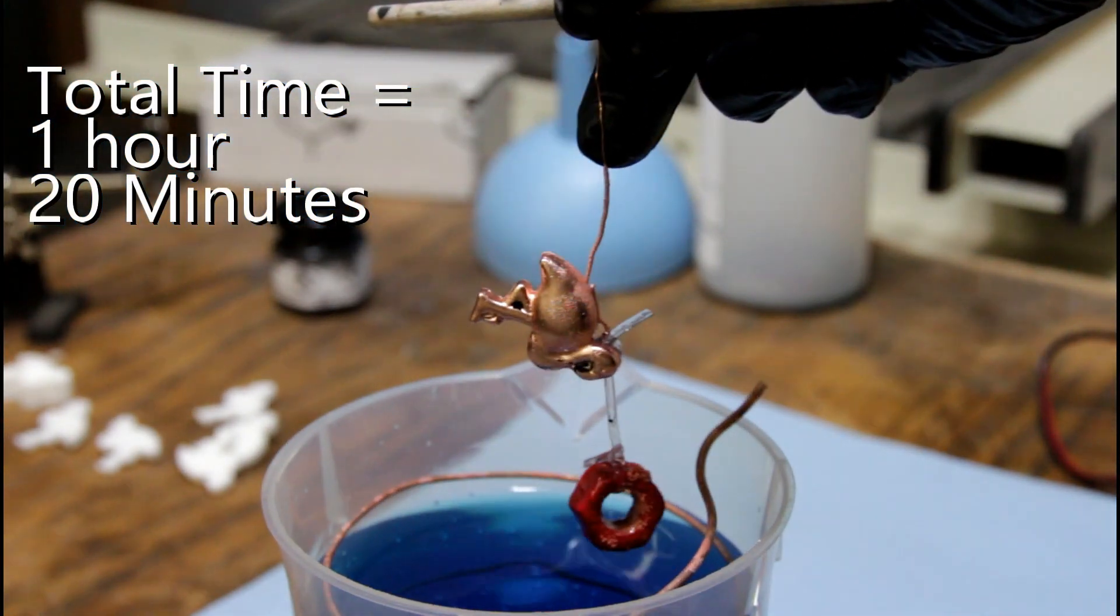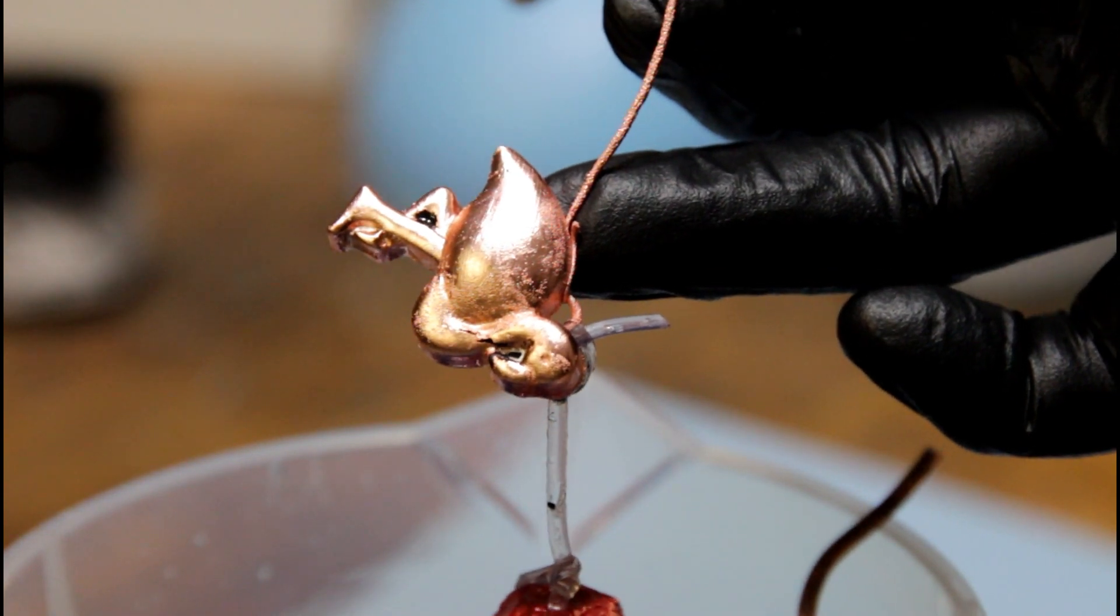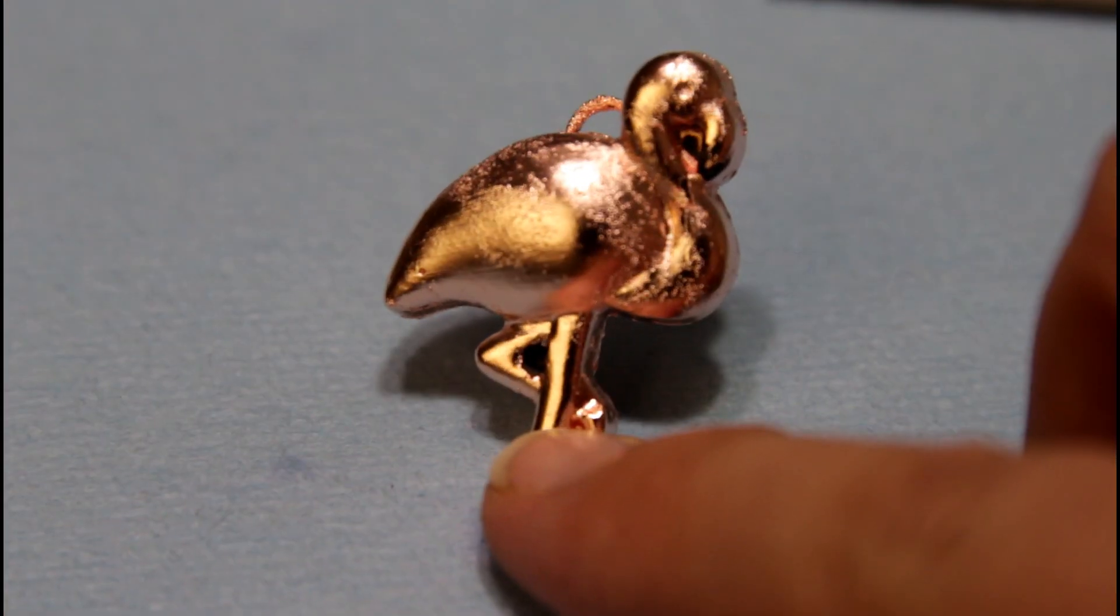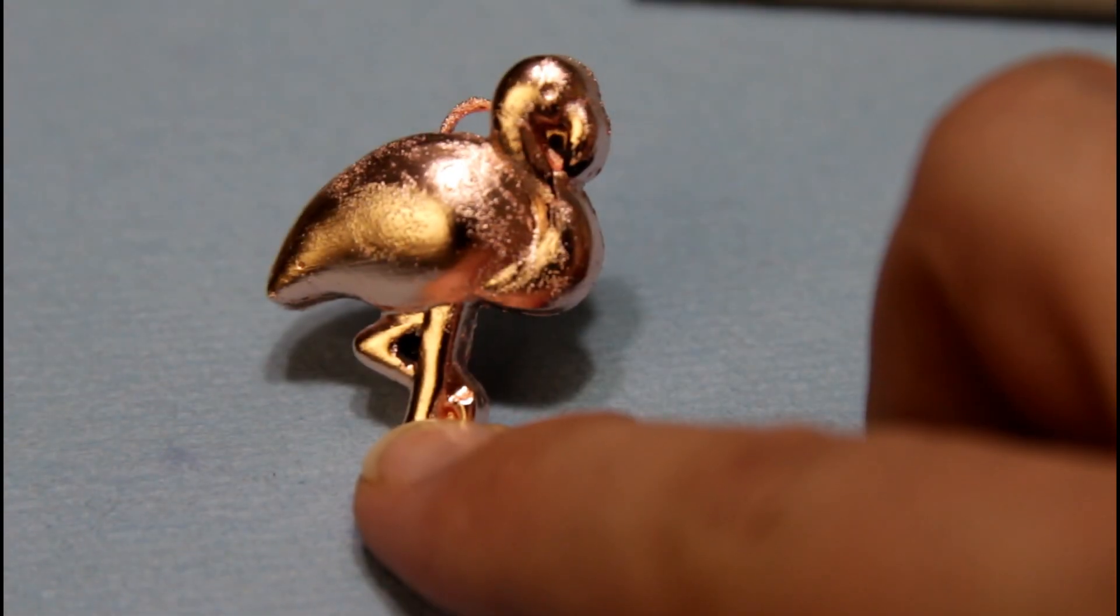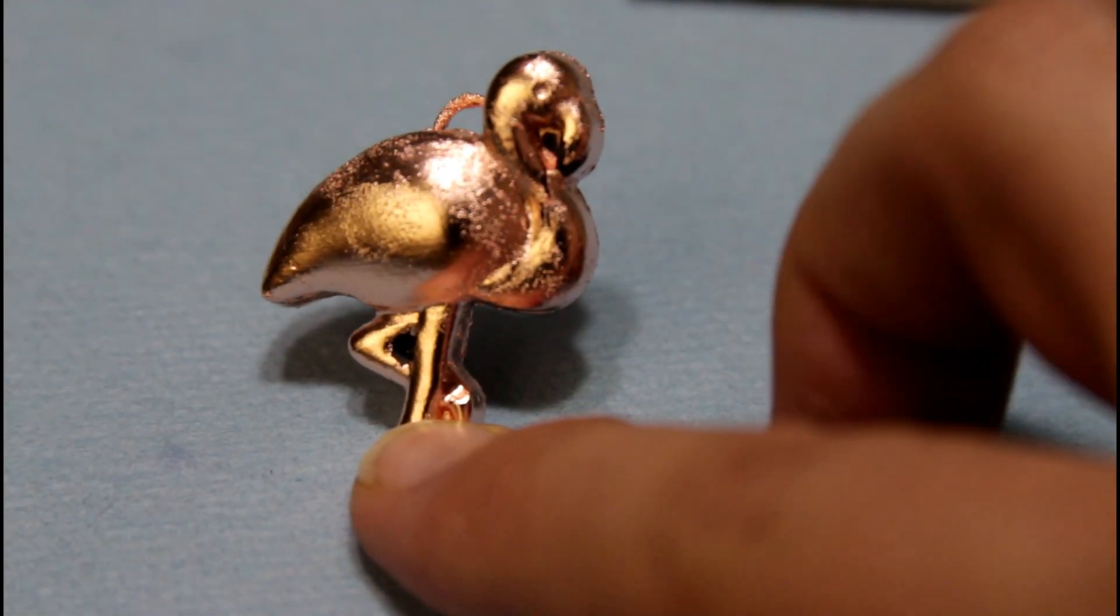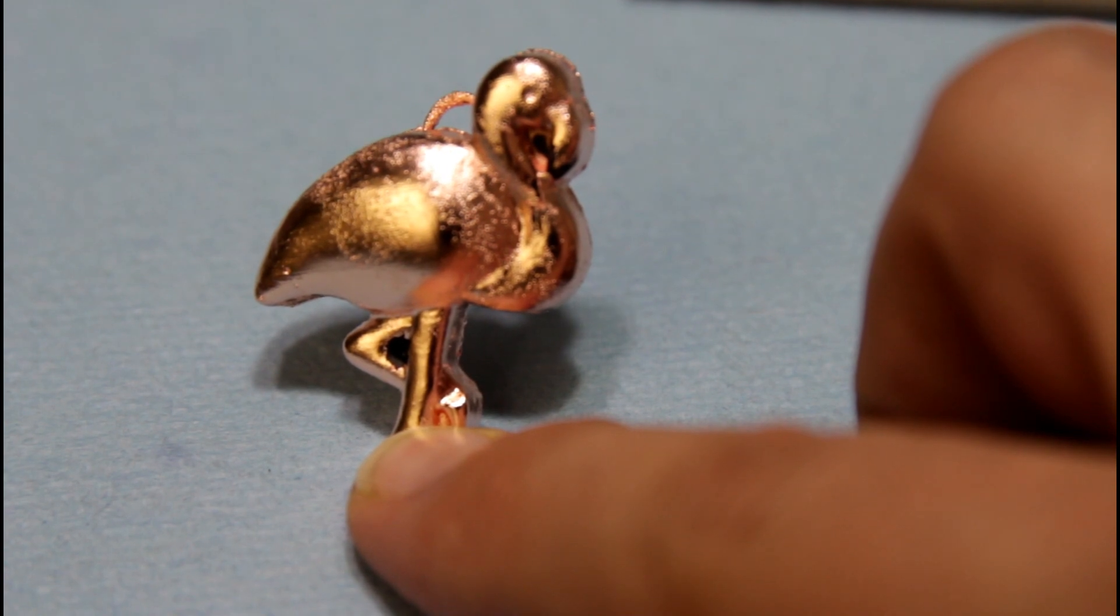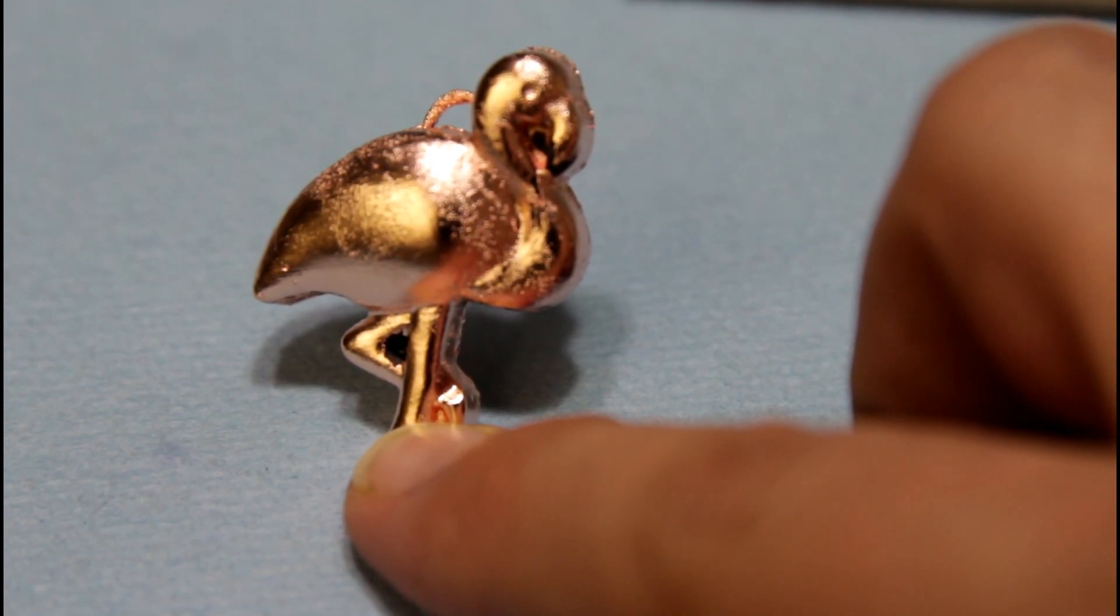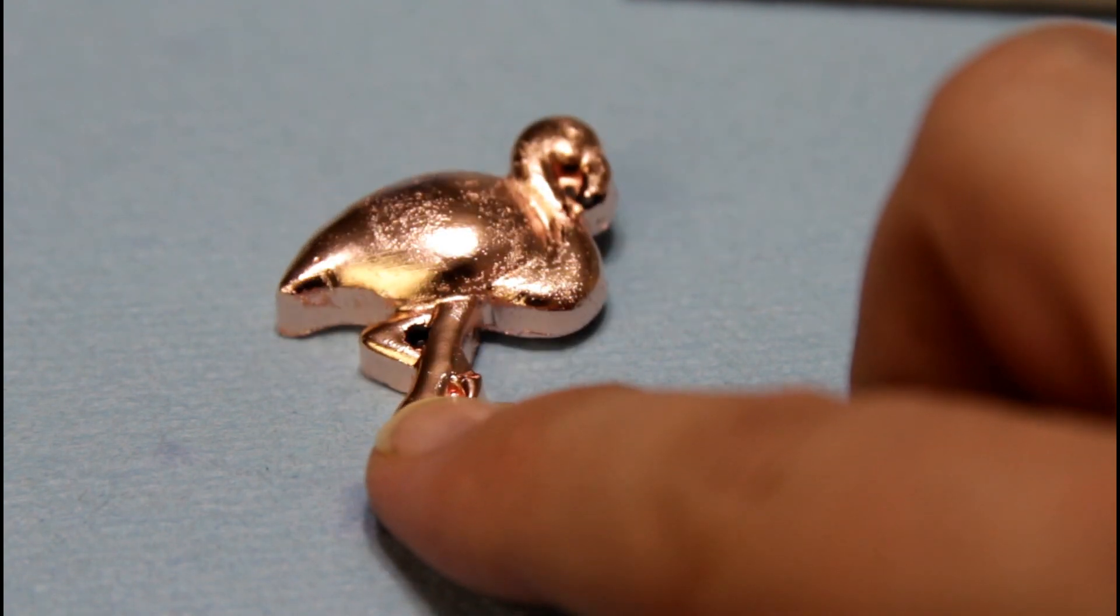I'm going to go ahead and rinse the solution off of it, and we can take a closer look at it. Nice little copper coating on there. You can see there's a tiny little bit of conductive paint there under the beak and by the leg, but the rest of it coated really well.